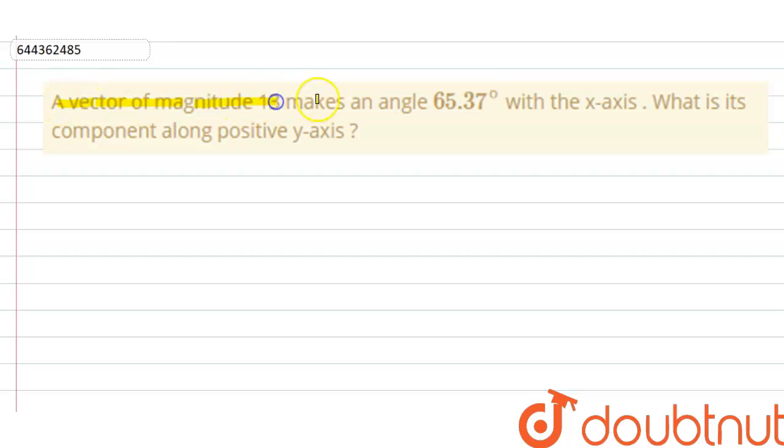A vector of magnitude 13 makes an angle 65.37 degrees with the x-axis. What is the component along positive y-axis? This question is based on the chapter on vectors. Here the vector is given of magnitude 13 and makes an angle 65.37° with the x-axis. Suppose it is theta.